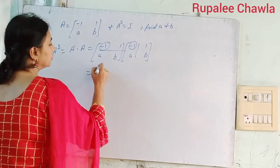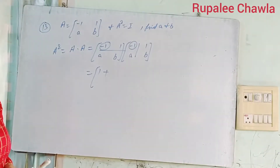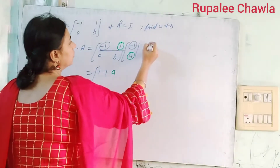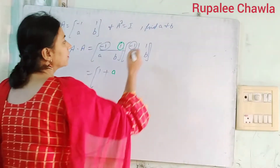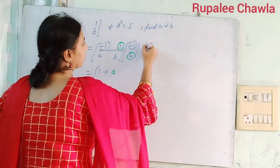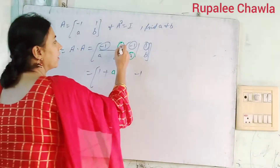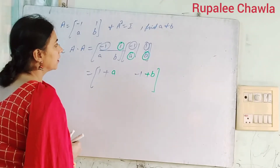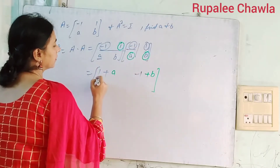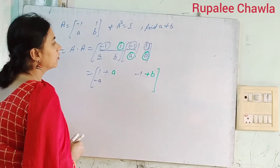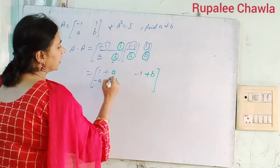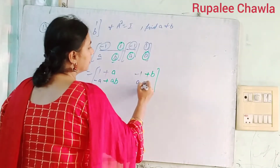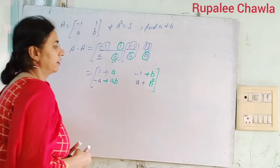तो पहला element: minus 1 को पहले के साथ — 1, बीच में plus का sign, फिर दूसरा element A के साथ। Similarly पहली row, दूसरा column: minus 1 को 1 के साथ — minus 1, और 1 को B के साथ plus B. Next row: इसको इसके साथ — minus A, फिर B को इसके साथ — plus AB. फिर A को 1 के साथ — A, plus B को इसके साथ — B square. Is that clear?